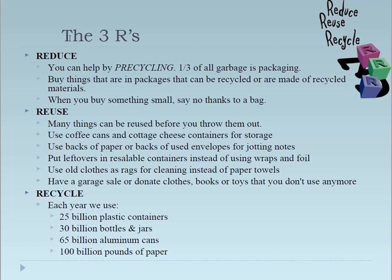Then Recycle. Each year we use 25 billion plastic containers, 30 billion bottles and jars, 65 billion aluminum cans, and 100 billion forms of paper. All these things can be recycled — plastic, glass, aluminum, and paper. By using recycling, we can reduce pollution and effectively manage this solid waste collection. These are the three R's: reduce consumption, reuse things, and recycle.